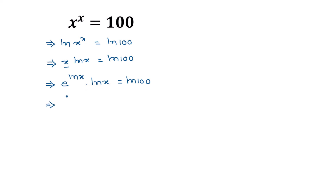Taking the Lambert W function of both sides and rearranging — writing ln of x times e to the power ln of x first — we get W of that expression on the left equals W of ln of 100 on the right.